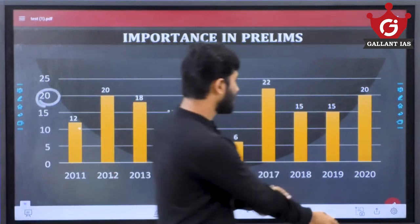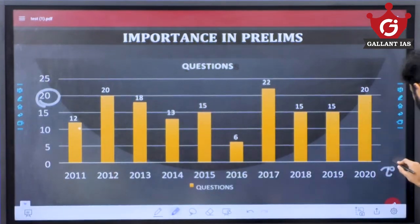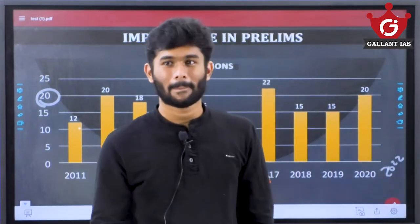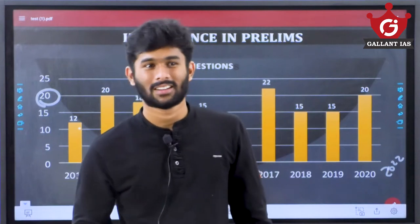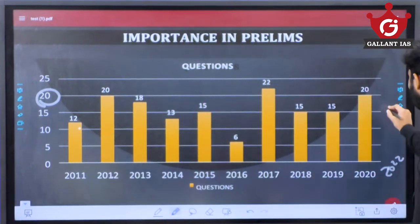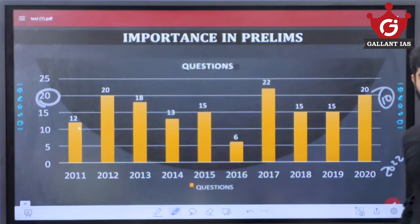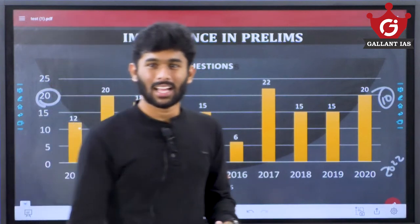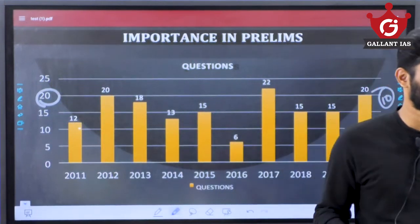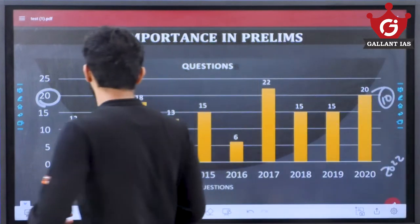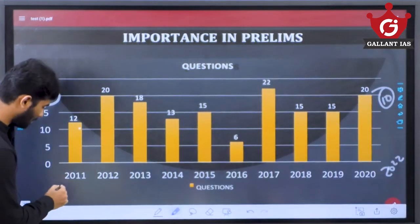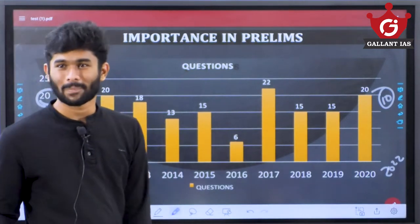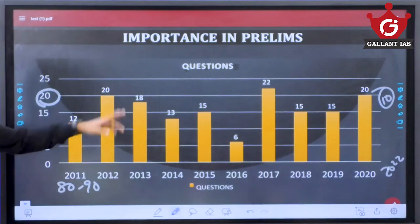In 2022, only about 10 questions were asked from polity — this year was an exception. But majorly, 15 to 20 questions will be asked. In an era where the cutoff usually ranges between 80 to 90, polity will be a game changer, showing the relevance of this section.